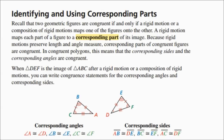Recall that two geometric figures are congruent if and only if a rigid motion or a composition of rigid motions maps one of the figures onto the other. Those are things like translations, reflections, and rotations — our rigid motions. If we can match each part of the figure to its corresponding part, we preserve the length and angle measure, so the shape doesn't change.